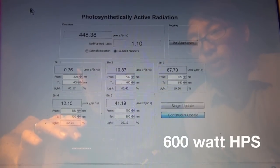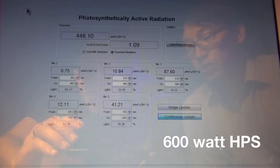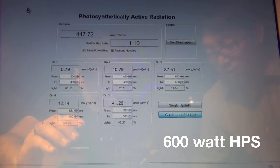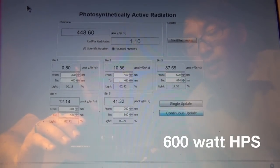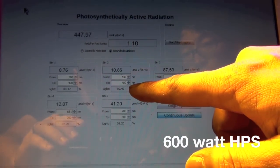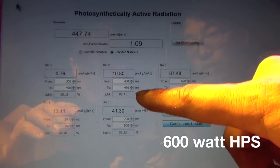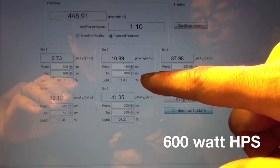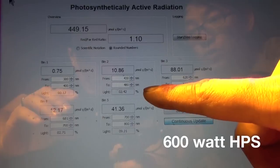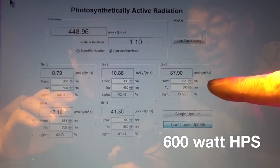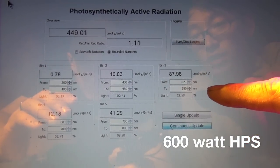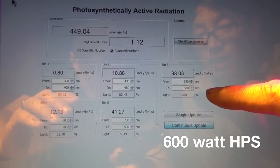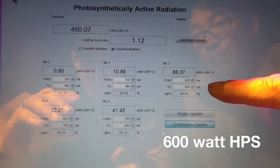The spectroradiometer is pulling from the 600 watt high pressure sodium bulb. Here in bin 2, the blue spectrum between 430 and 480, we're getting about 11 micromoles of blue. And in bin 3, the red spectrum 620 to 680 nanometers, we're getting about 88 micromoles.